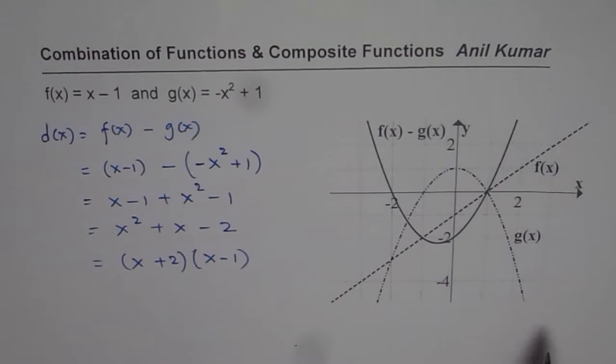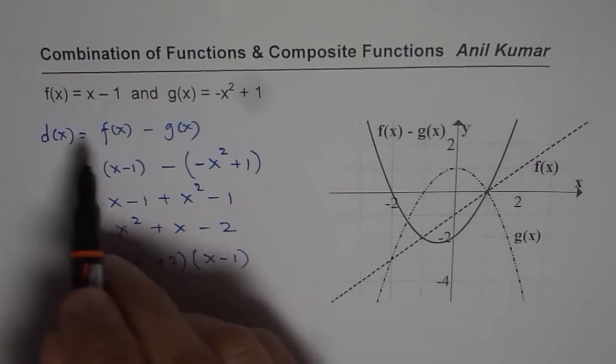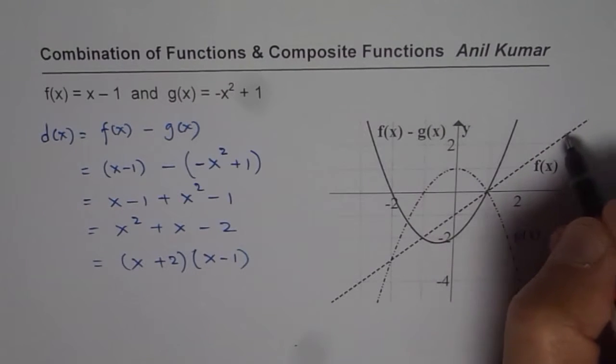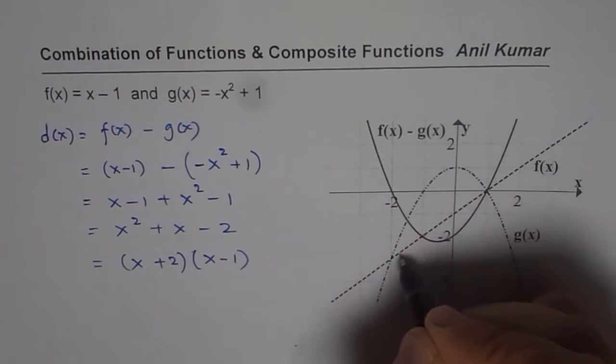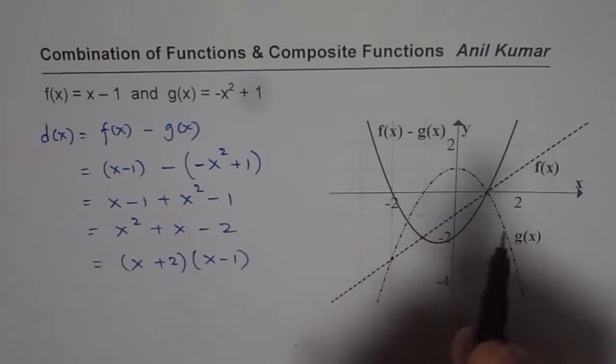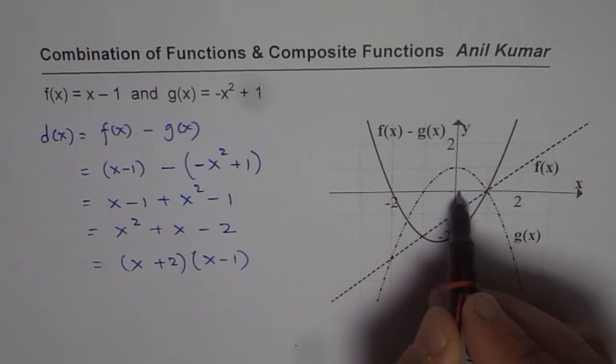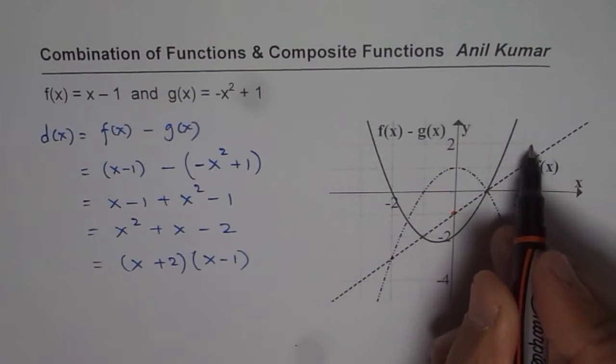Now in this particular video what I have done is, I am not repeating how we sketched f of x and g of x. You know f of x is a straight line, so that is a straight line f of x. With slope of 1 and y intercept of minus 1. So that is my y intercept of minus 1 and slope of 1, 1 unit up, you get the line.